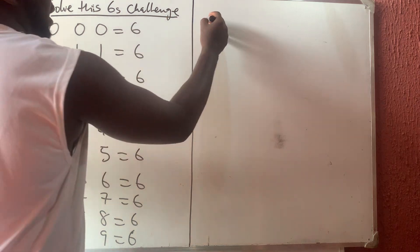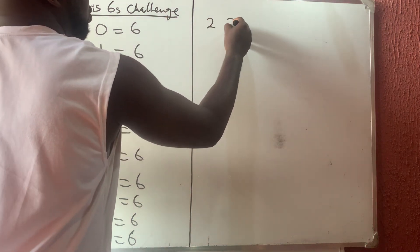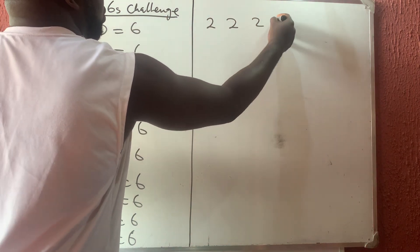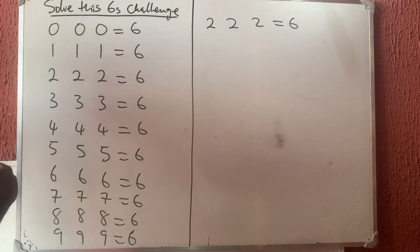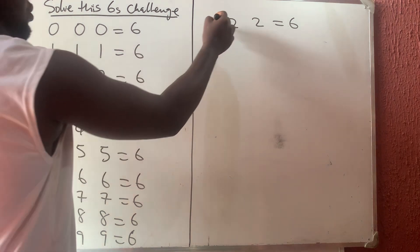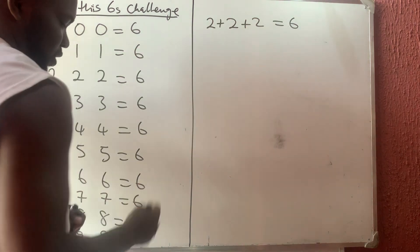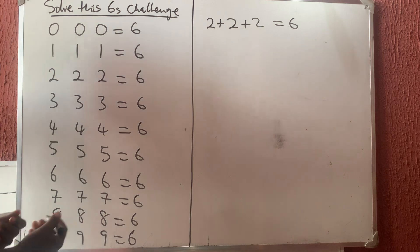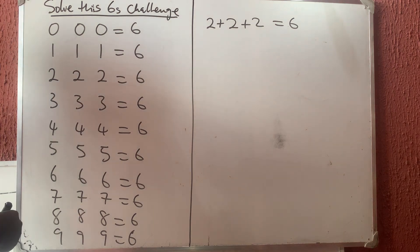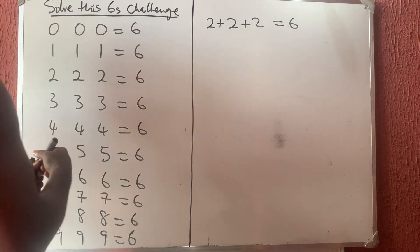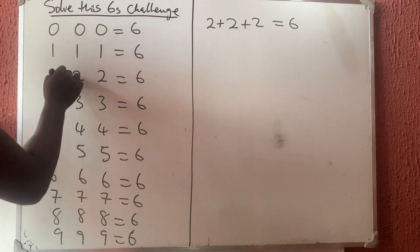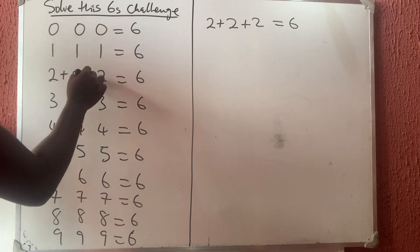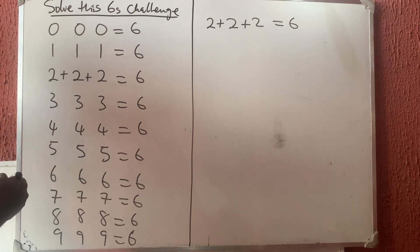Let me start with the easiest one: two, two, two — that can give us six. If I put plus here and plus here, I get two plus two is four, four plus two is six. So just putting plus gives us six.